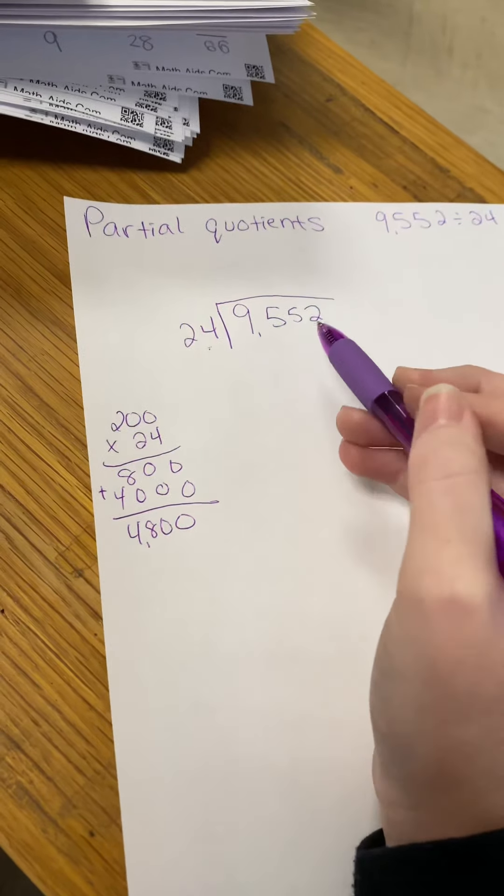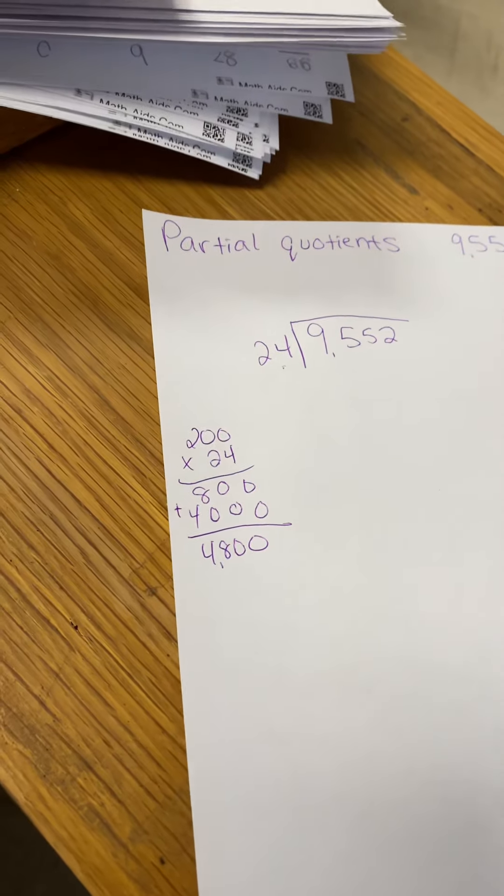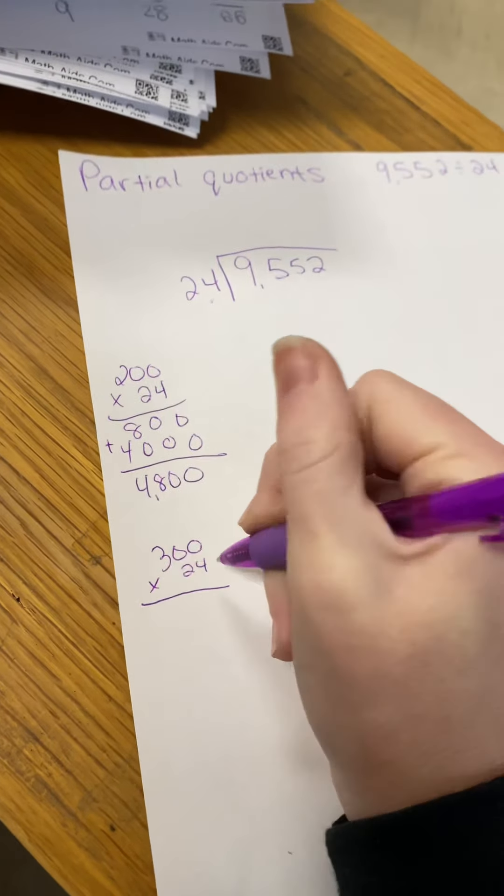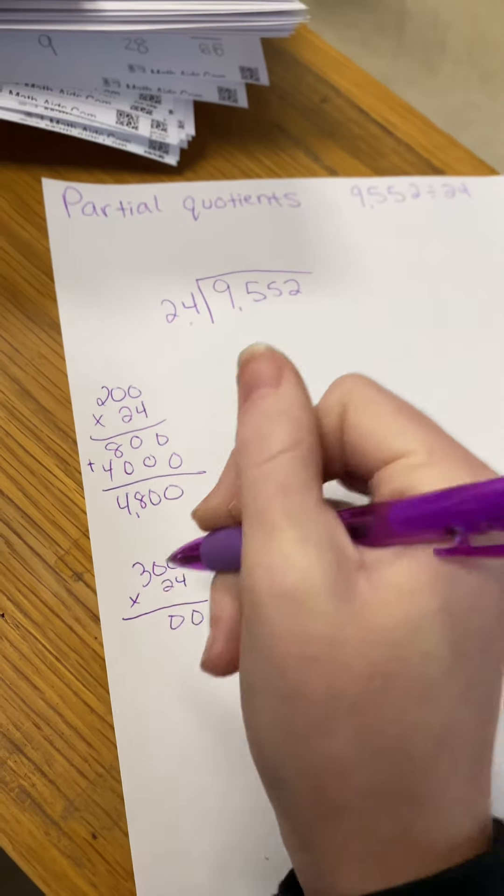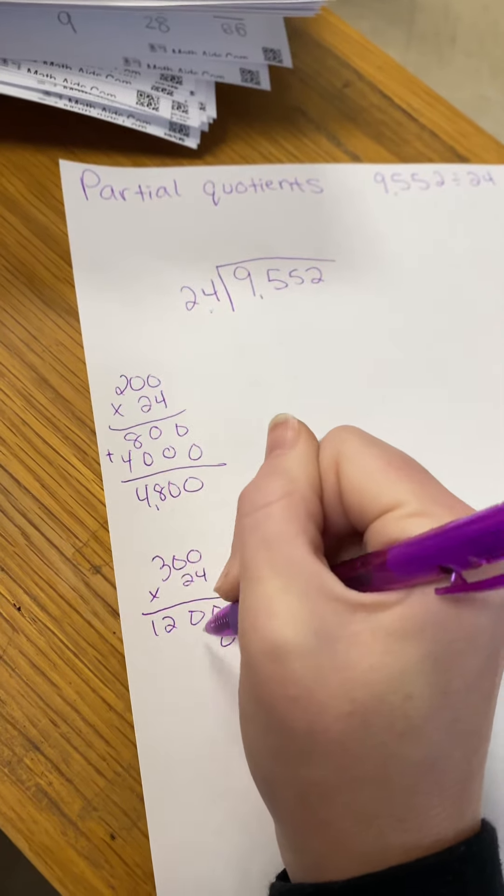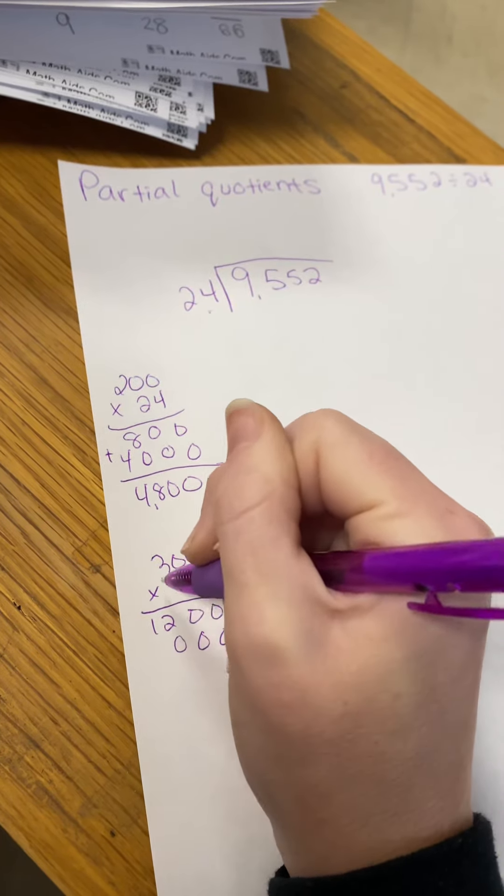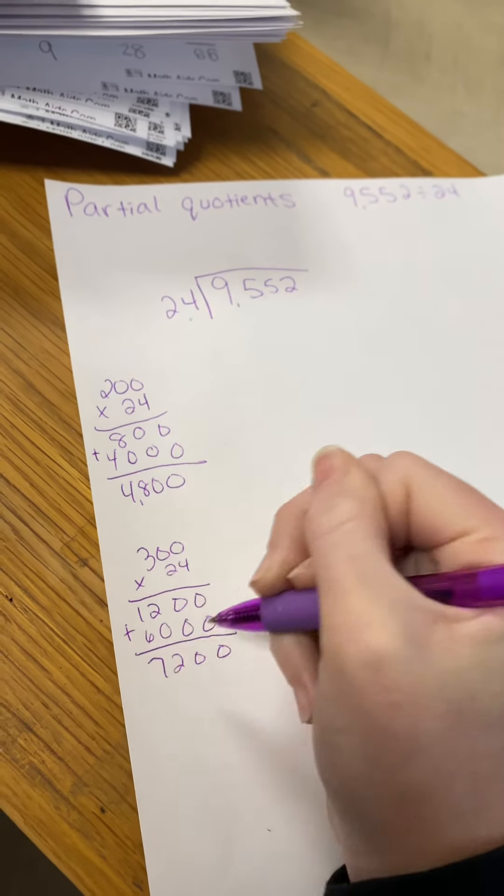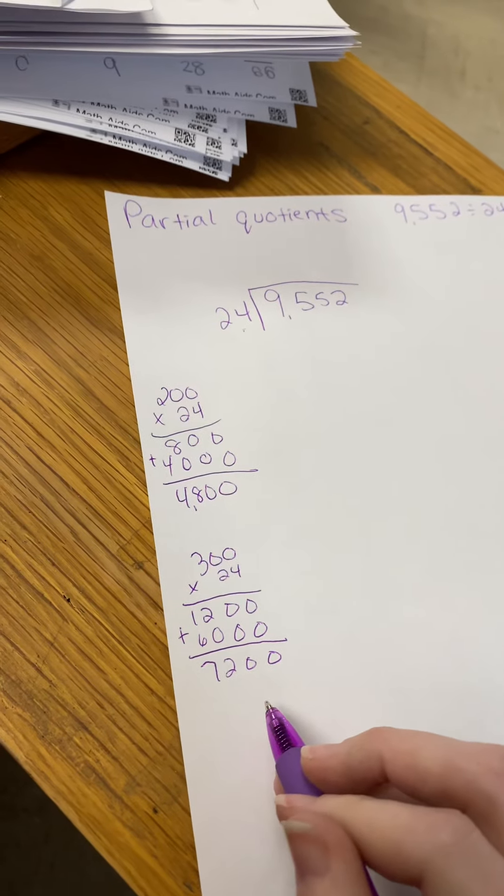That's not really close to 9,000. So I would tell the kids, go higher and let's see what happens. Let's try 300 times 24. 0 times 4, 0 times 4, 4 times 3 is 12. Put your 0 placeholder, 2 times 0, 2 times 0, 2 times 3 is 6. Add your partial products, 7,200.